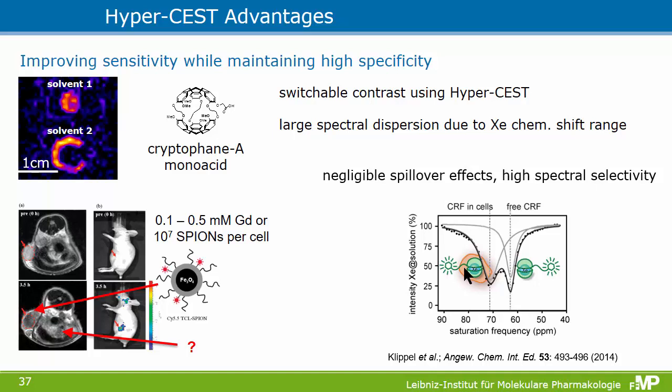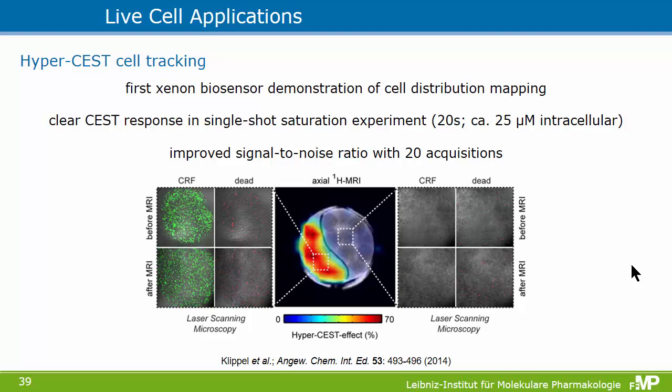The advantage of using xenon for the CEST experiment is that xenon is very sensitive to its molecular environment, so it comes with all the advantages of paracest agents. For example, you can distinguish between biosensors associated with cells compared to free biosensors outside the cell — a Z-spectrum with two distinct resonances. You can do this at the cell biology level, labeling cells with biosensors. Using a cage with fluorescein to do fluorescence imaging, embedding them in alginate beads, and detecting the labeled volume.